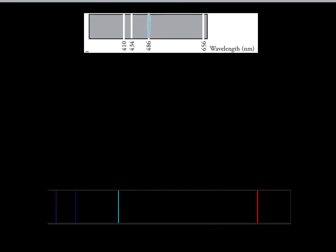Now let's take that same line and figure out how much energy there is in that particular wave. As wavelength changes, so does the amount of energy — and those two are inverse, so as wavelength goes up, energy goes down, and different wavelengths produce different colors. For this particular wave, we look at the energy equation: energy is equal to Planck's constant times the frequency. Note that this deals with frequency, not with wavelength — we can't just plug in the 486. We need to take the frequency number from the last problem.